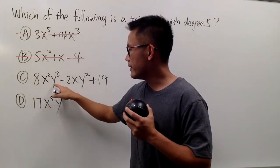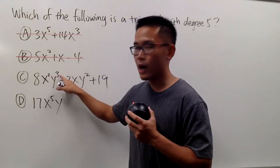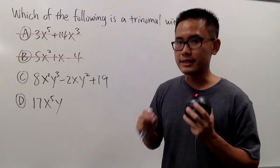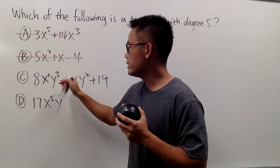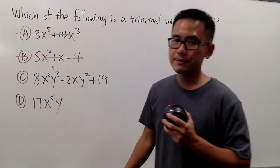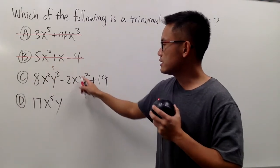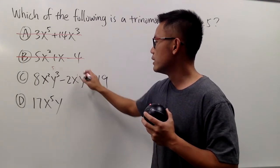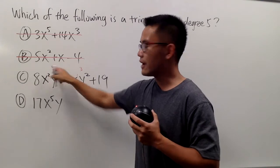Here we have x squared, and then we multiply by y to the third power. This is a term, and you have to combine the exponents together. 2 and 3 together, that's 5. And then you see, this right here, it's also a term, and when you combine the exponents, this is like 1 and 2.